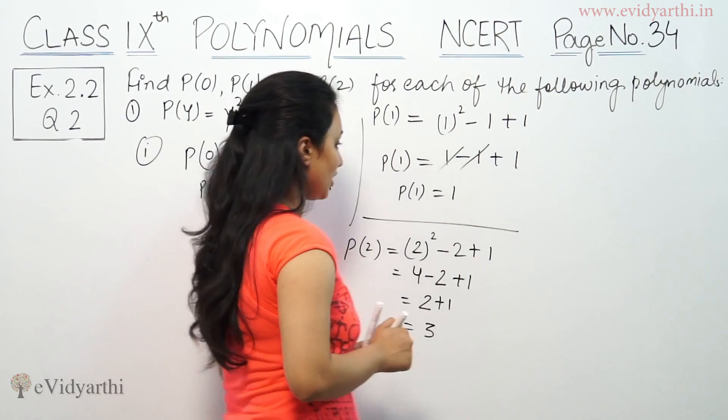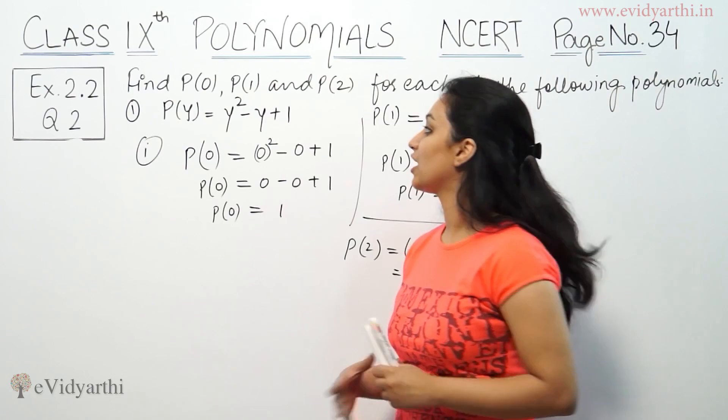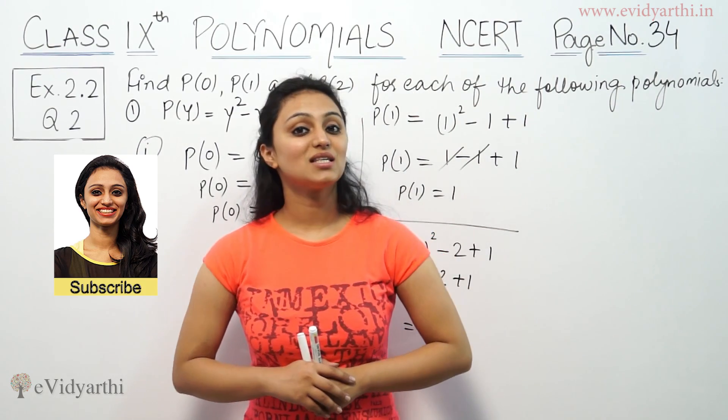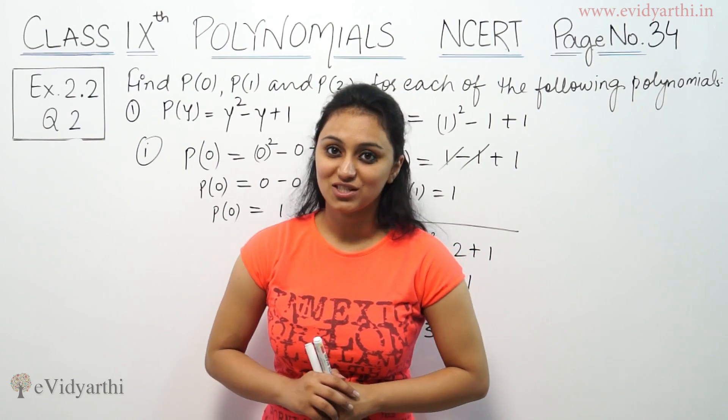So these values are P(0), P(1), and P(2). This was the second question from exercise 2.2. Do watch the next video for other parts of this question. Goodbye!